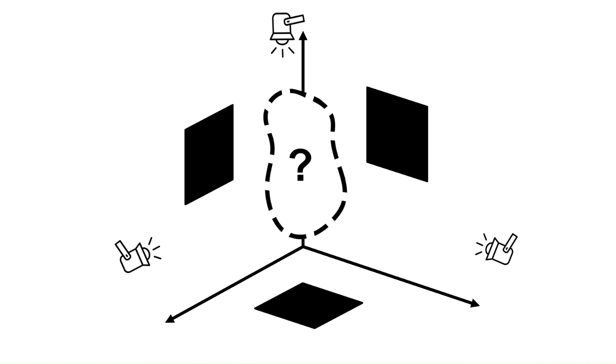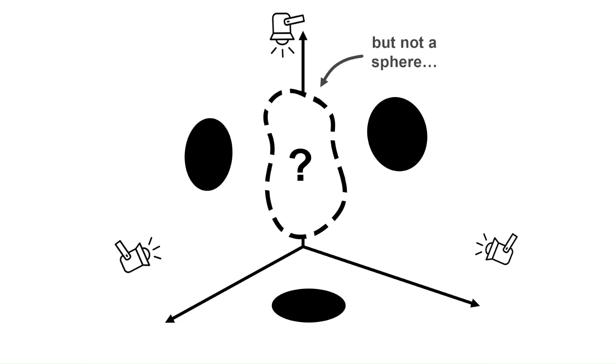So now we know that there are lots of shapes with three square shadows. But what about other shadows? Can you think of a 3D shape with these circular shadows, which is not a sphere? Leave your ideas in the comments.